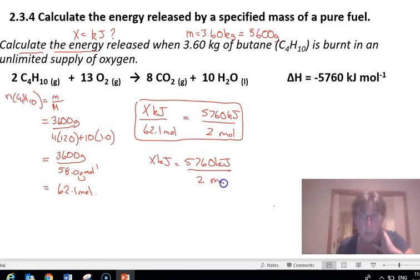And you have 62.1 mole, so you have a lot more than two, which means the amount of kilojoules that you have will be a lot more than two. So if you have moles on top and the bottom, you cancel on both.